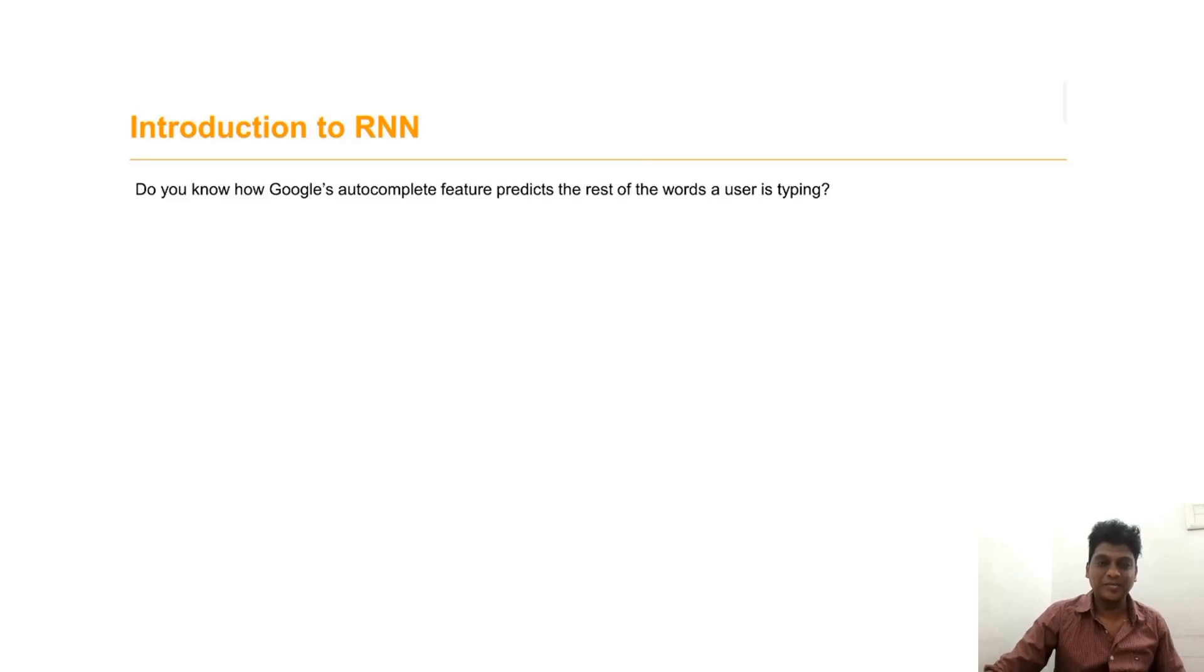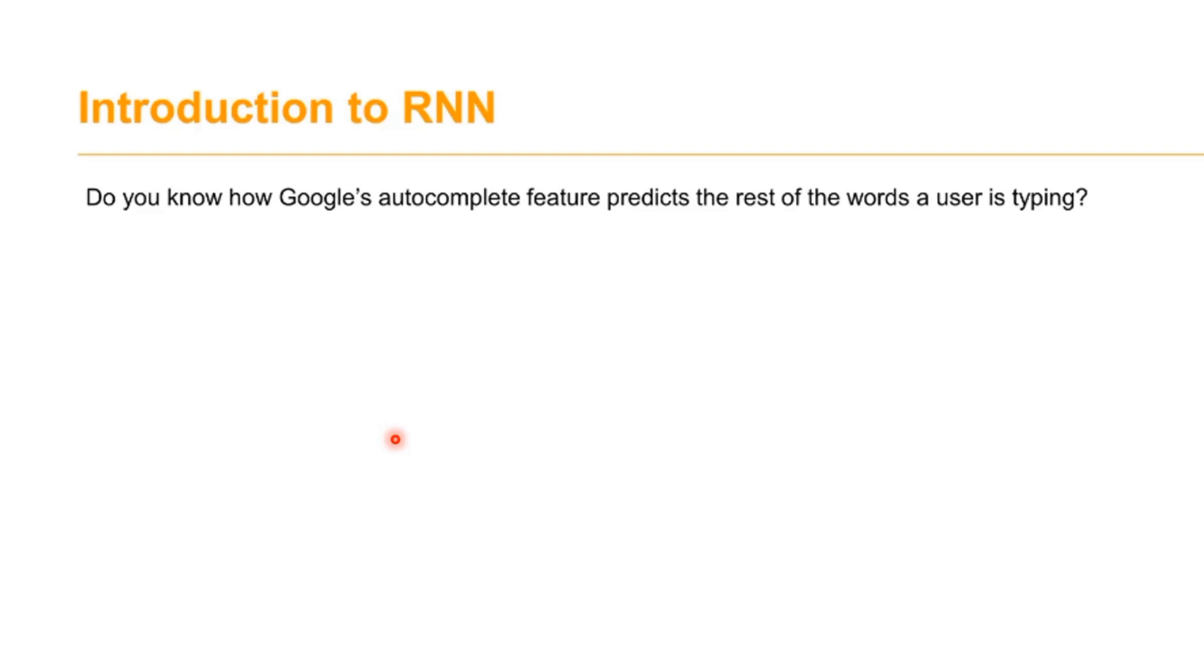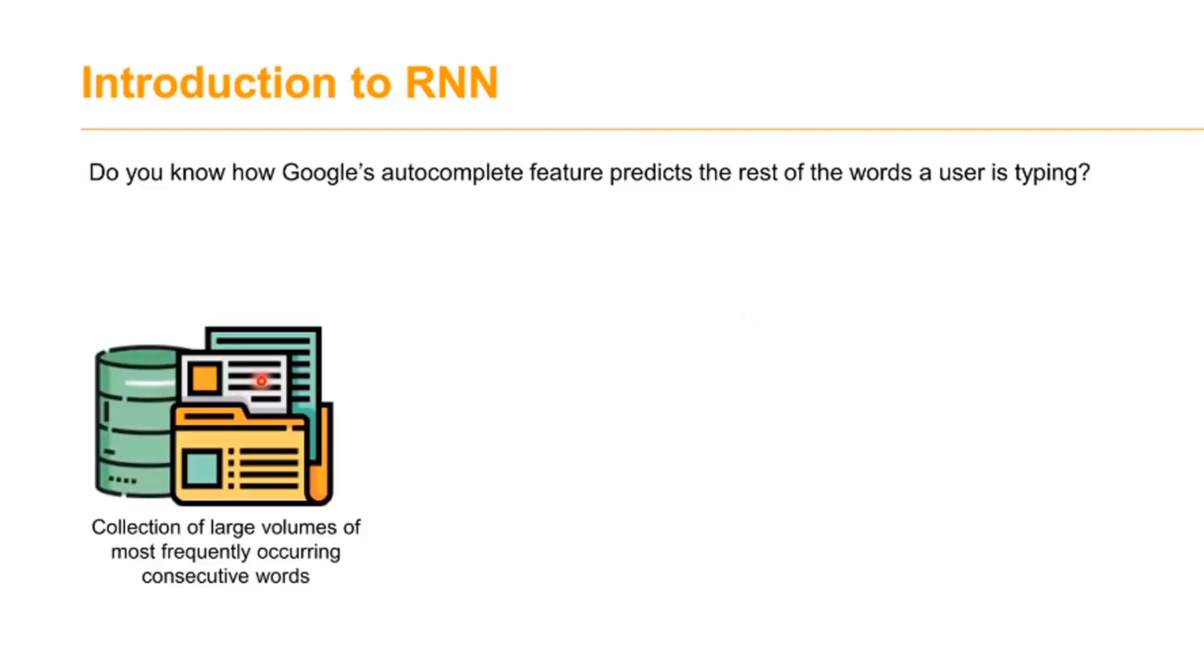Welcome to this video on Recurrent Neural Networks. Let me explain with an example. Do you know how Google autocompletes the words you're typing? Google has a database with a collection of large volumes of most frequently occurring consecutive words, and from these words,